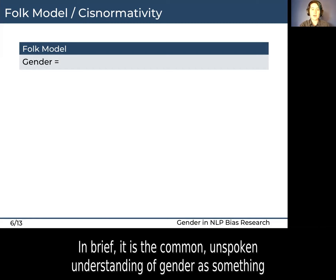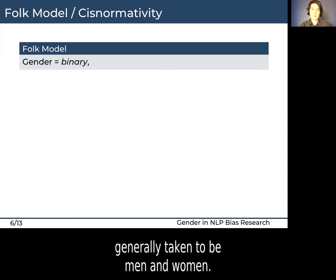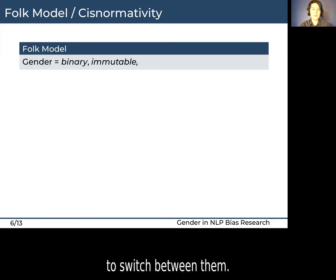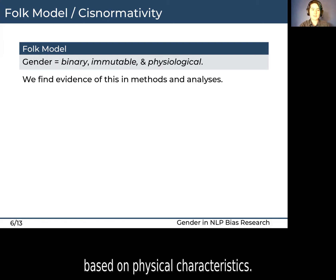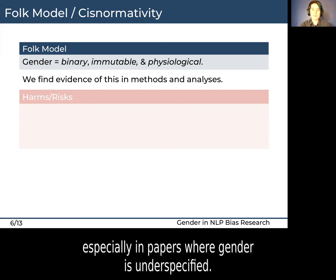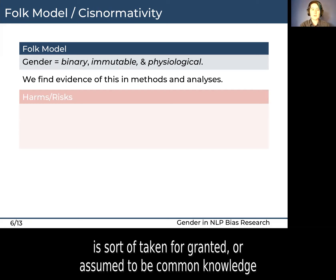In brief, the folk model is the common, unspoken understanding of gender as something that is binary — so there are only two possible categories, generally taken to be men and women. It's immutable: once you're assigned a category, it's not possible to switch between them. And it's physiological: assignment to categories is somehow based on physical characteristics. We find evidence of this model both in methods and analyses, especially in papers where gender is underspecified. In these cases, the definition of gender following the folk model is sort of taken for granted or assumed to be common knowledge.